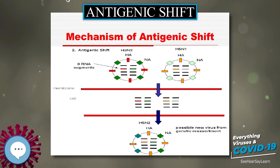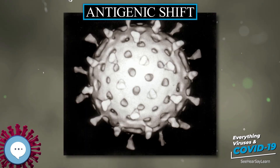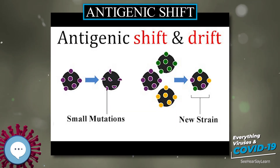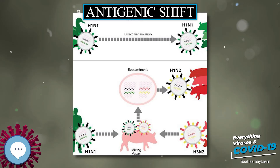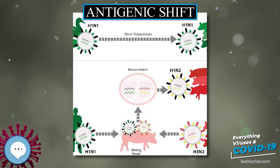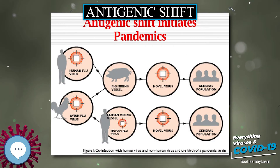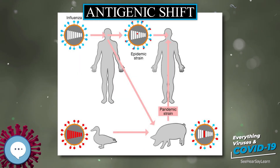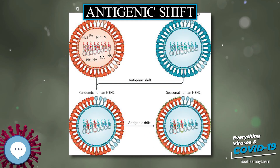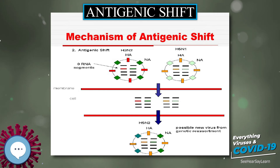Some strains of avian influenza, from which all other strains of influenza A are believed to stem, can infect pigs or other mammalian hosts. When two different strains of influenza infect the same cell simultaneously, their protein capsids and lipid envelopes are removed, exposing their RNA, which is then transcribed to mRNA. The host cell then forms new viruses that combine their antigens — for example, H3N2 and H5N1 can form H5N2 this way. Because the human immune system has difficulty recognizing the new influenza strain, it may be highly dangerous and result in a new pandemic.